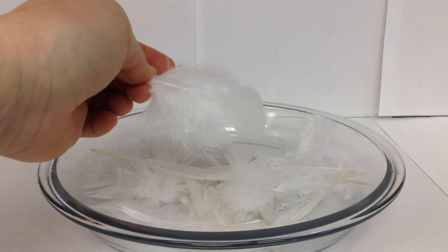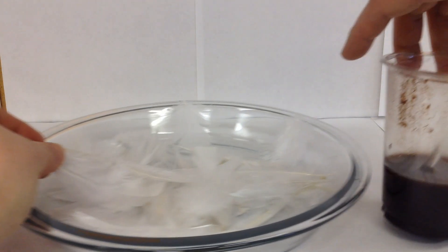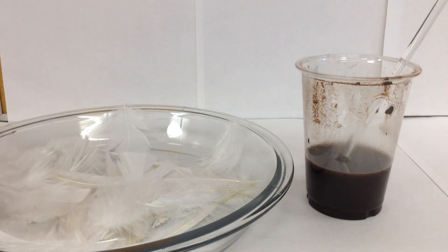We have some goose feathers from the craft store and we are going to dip them in our simulated crude oil. This is vegetable oil with cocoa powder.